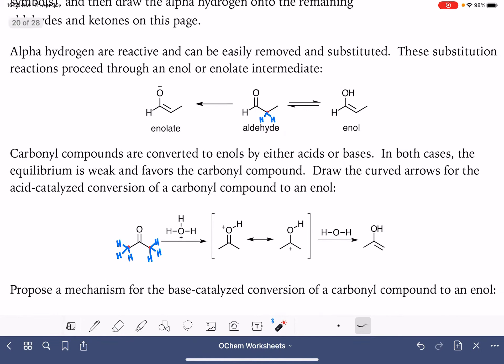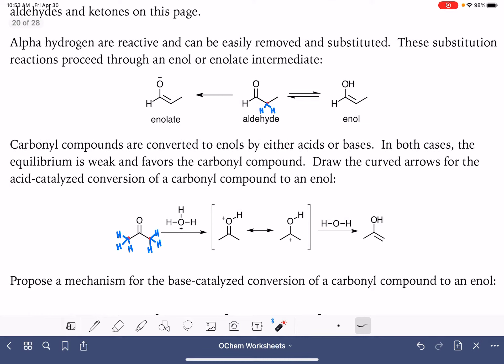We're going to start with the enol though, because that one is a little bit more familiar to us. We can convert a carbonyl compound to an enol either by an acid or a base. Regardless of what we're using, the equilibrium, the process of forming the enol is very weak equilibrium, and it favors the carbonyl compound, meaning that when you do this type of reaction, the majority, the large percentage of the molecule is going to remain unreactive as either an aldehyde or a ketone.